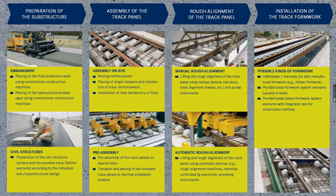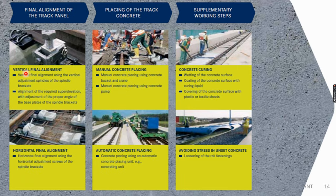Then we do installation of formwork, because in between the sleepers we have to pour concrete, so formwork is done on the sides. Final alignment using machinery is done, at which point the tolerance of 0.5 mm is achieved. Then we do placing of concrete — it can be manual as well as automatic by use of machines. Then supplementary work such as curing is done. We loosen up the fastening so that we avoid stresses in unset concrete.